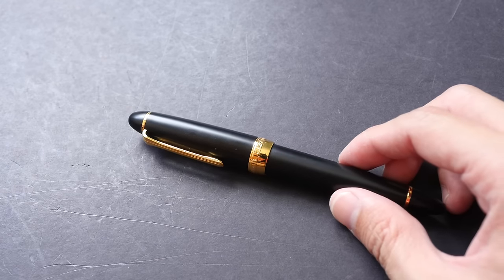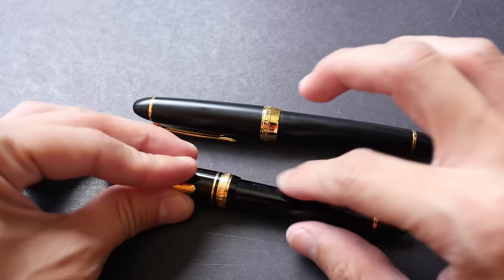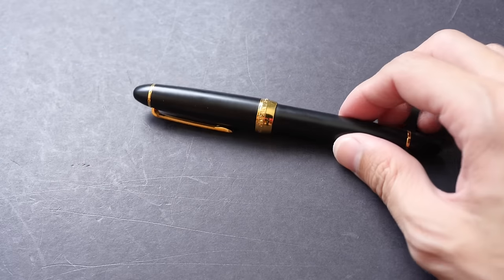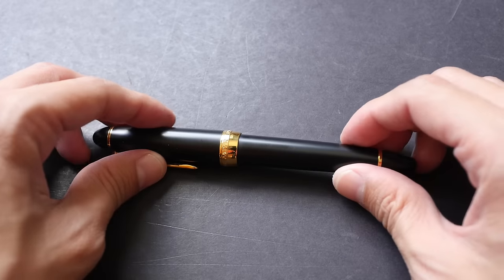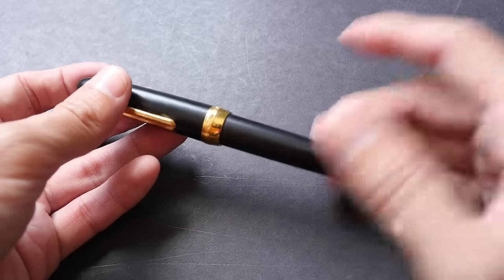My other Sailor pens come with the glossy body, so this is to help differentiate this pen against the glossy body pens. But the matte body is more expensive, so to save some money I would recommend you just get the glossy body instead.